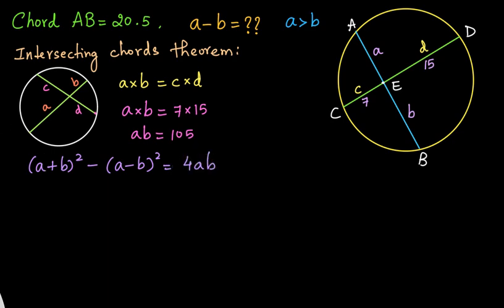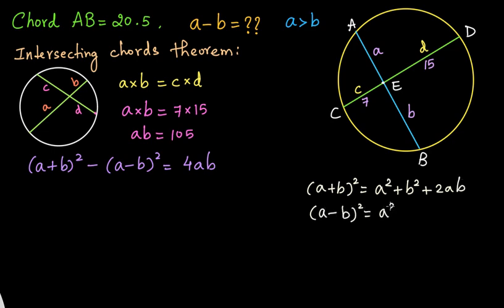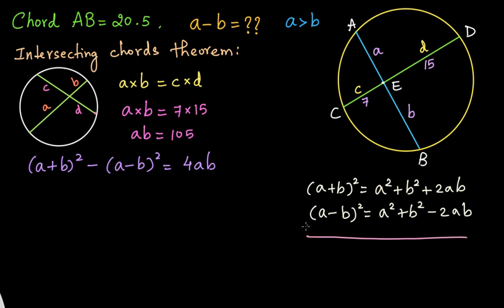Let me briefly explain how we get this identity. We know A plus B whole square equals A squared plus B squared plus 2AB. We know A minus B whole square equals A squared plus B squared minus 2AB. Taking the difference of the two, we reverse all the signs of the second expression. The A squared and minus A squared cancel out, B squared minus B squared cancels out, and 2AB plus 2AB gives us 4AB. That is how we get the identity.